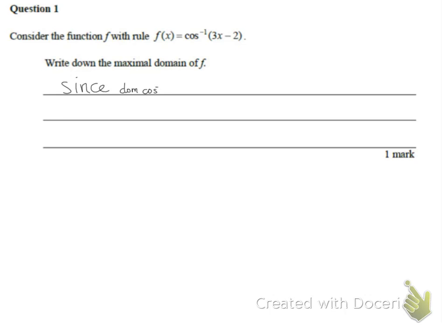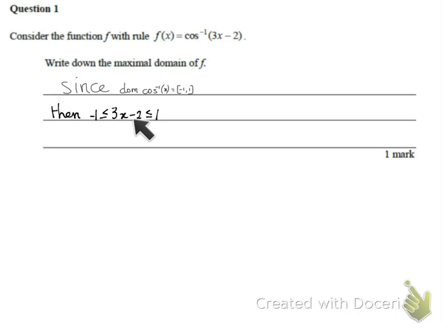Let's relate first to the domain of the normal inverse cos of x function, which goes from negative one to one. Then let's take the inside part, the 3x minus 2. That must be between negative one and one. So we add two to both sides and then divide by three, and the implied domain must be between one third and one for x. That's the domain of our function.